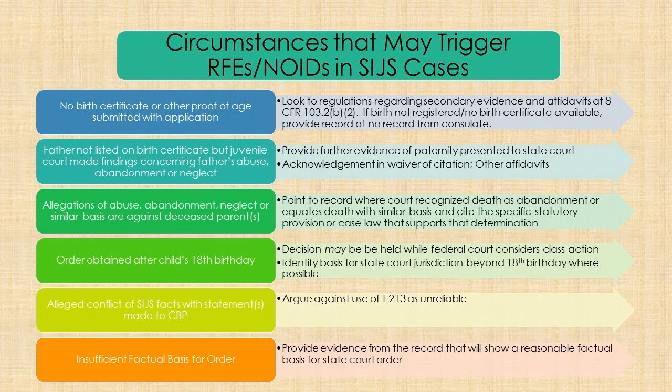Let's look at some common circumstances that may trigger RFEs and NOIDs and what you might do in response. You might get an RFE where there is no birth certificate or other proof of age submitted with the application. If that happens, you should look to the regulations concerning secondary evidence and affidavits at 8 CFR 103.2. If the birth was not registered and there's no birth certificate available, you could provide a record of no record from the consulate, which is specifically contemplated in those regulations. If the father is not listed on the birth certificate but the juvenile court made findings concerning the father's abuse, abandonment, or neglect, you could provide further evidence of paternity presented to the state court.